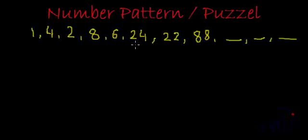If you see it carefully, it is actually neither in ascending order nor in descending order. The first number is 1, then we have 4, and after 4 we have 2 which is less than 4. After 2 we have 8 which is more than 2, and then we have 6. 6 is again less than 8. After 6 we have 24 which is way more than 6, and after 24 we have 22.